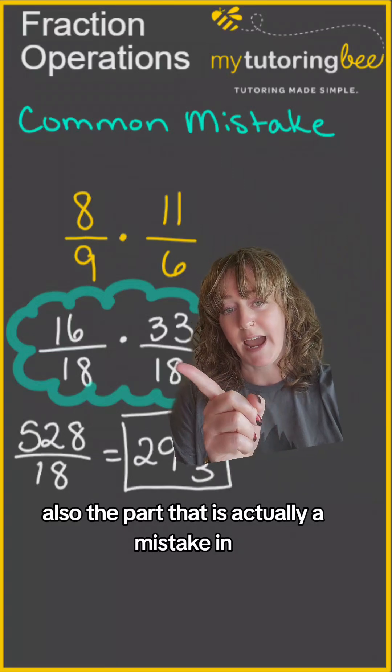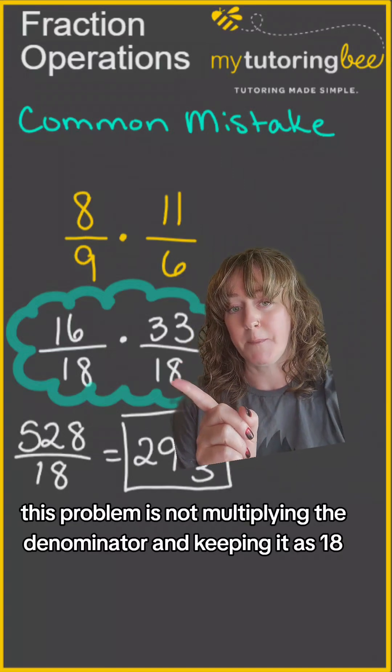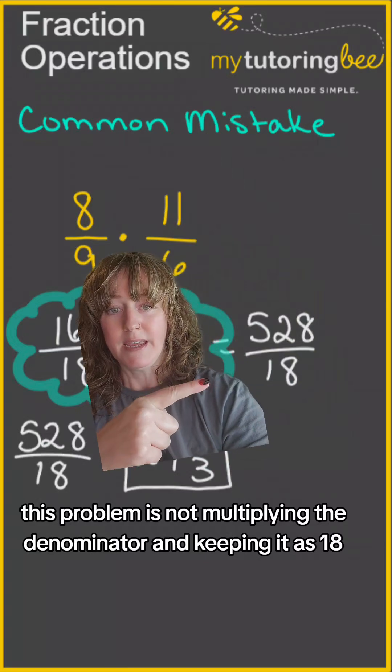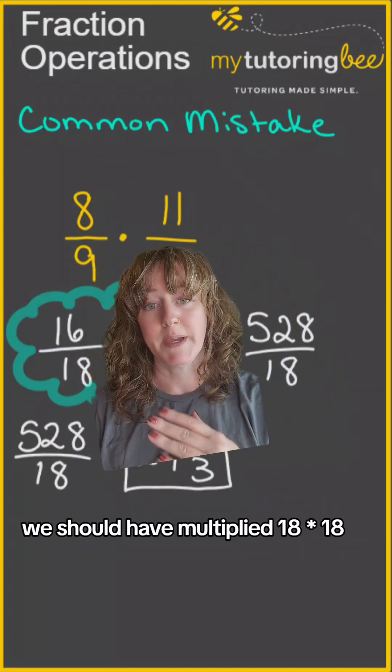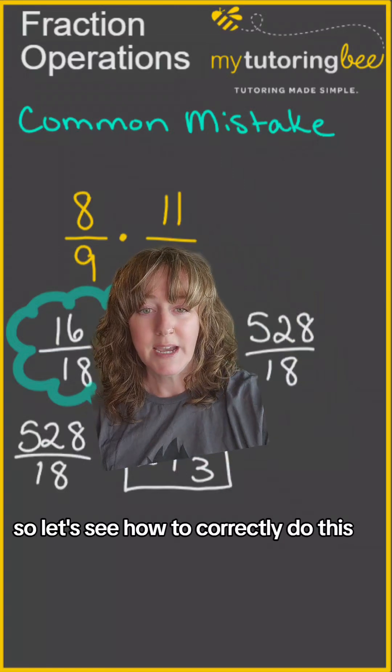Also, the part that is actually a mistake in this problem is not multiplying the denominator and keeping it as 18. We should have multiplied 18 times 18. So let's see how to correctly do this.